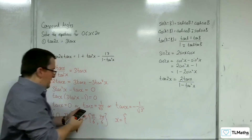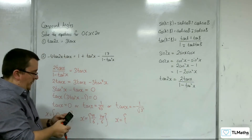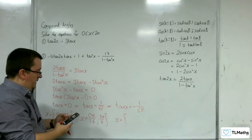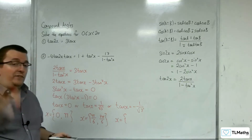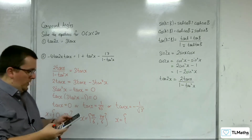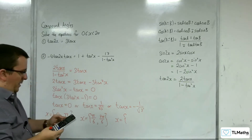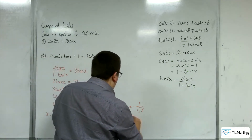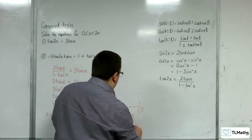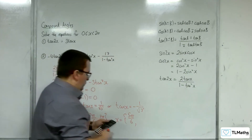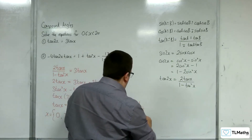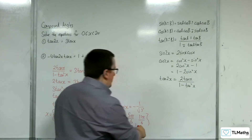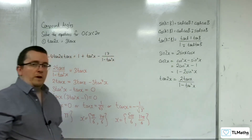Inverse tan of minus 1 over root 3 is minus pi over 6. Now that's outside the range, so I've got to add pi to that, and I get 5 pi over 6 — that's inside. Add pi to that, we get 11 pi over 6. Add pi to that, you're outside the range.